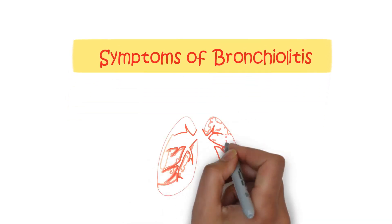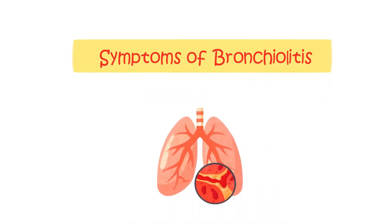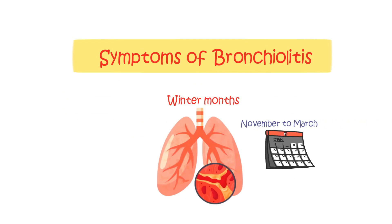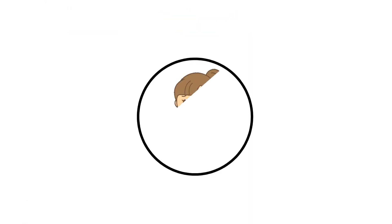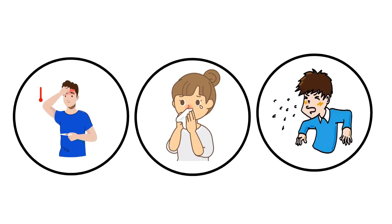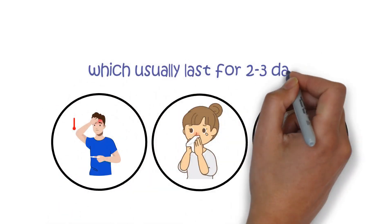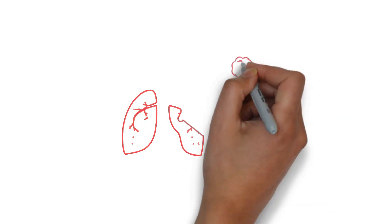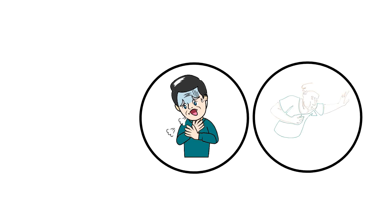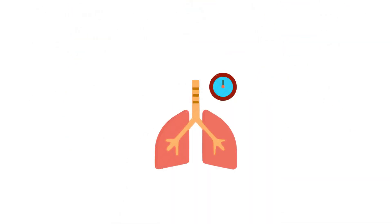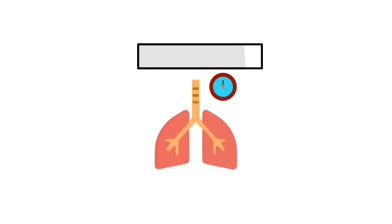Bronchiolitis in the UK tends to occur during the winter months, from November to March. Initially, it presents with cold symptoms such as a runny nose, cough, and mild fever, which usually last for 2-3 days. As the infection progresses to the bronchioles, additional symptoms may arise, including rapid breathing, difficulty breathing, and wheezing. The respiratory rate may increase significantly, ranging from 60 to 80 breaths per minute.